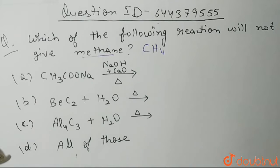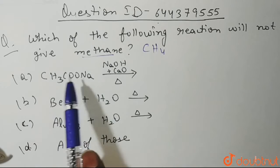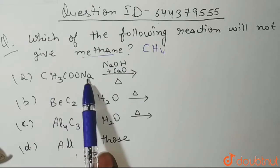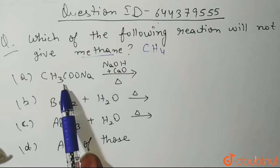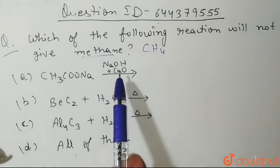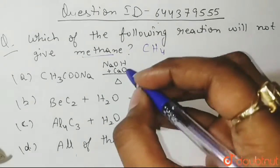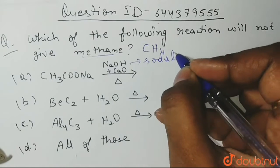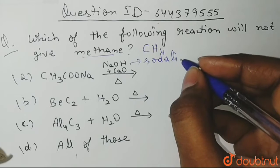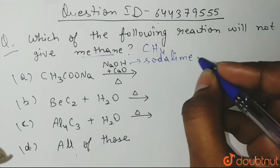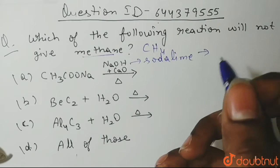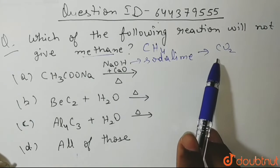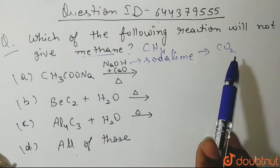As you can see here in the first reaction, we have a sodium salt of acetic acid or you can also call it sodium acetate. We are treating it with NaOH CAO, which is known as soda lime and is used for decarboxylation. Decarboxylation means removal of CO2 gas.